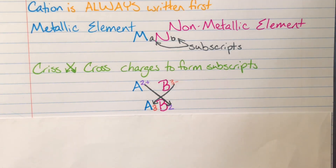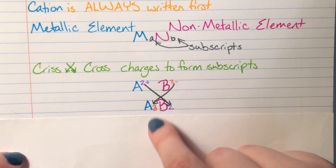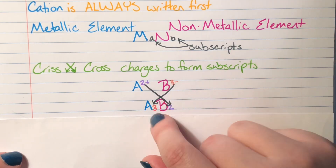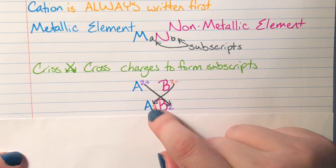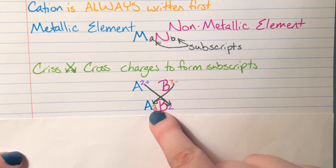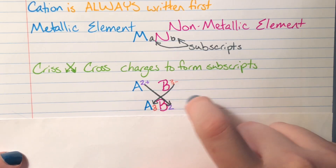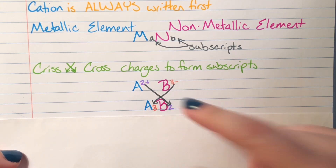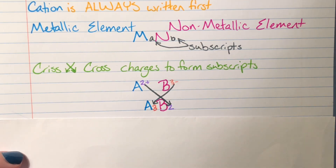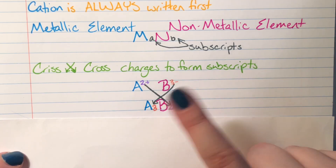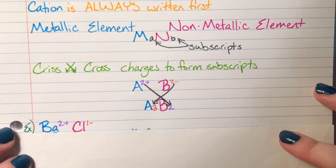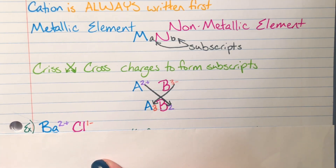The lowest common multiple between two and three is six. Multiplying positive two by three gives +6; multiplying negative three by two gives -6. Positive six plus negative six equals zero — a net charge of zero — confirming this is the correct formula.